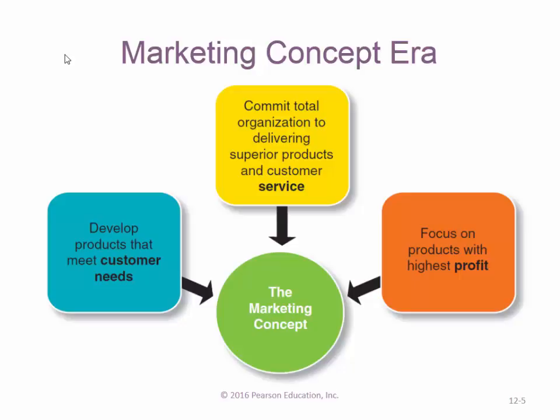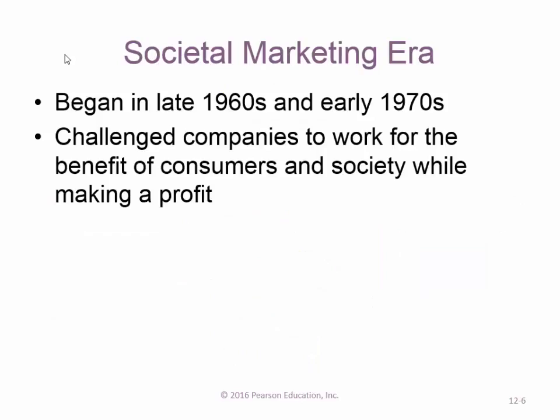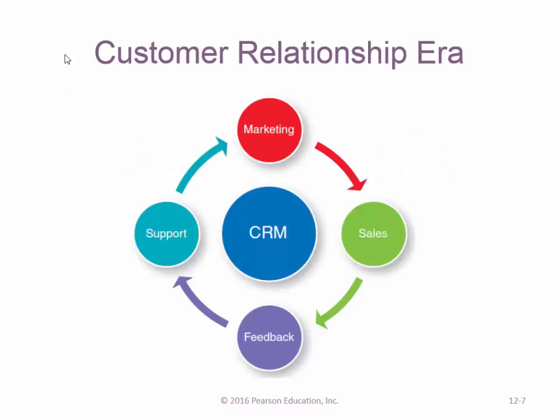The marketing concept era is where we are now — commitment to the total organization, delivering superior products and services, developing products that meet customers' needs, and focusing on products with the highest profit. Societal marketing in the 1960s and 70s challenged companies to develop a societal angle while making a profit. Then the customer relationship era: we have the market, the sale, feedback, and continue providing support to understand customers' different needs and offer additional products — that's why Amazon keeps sending you related book recommendations.